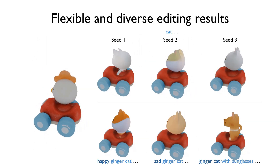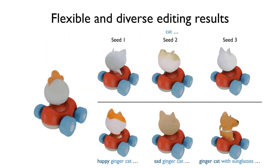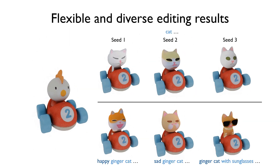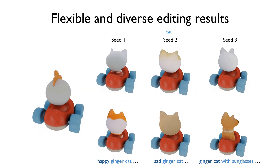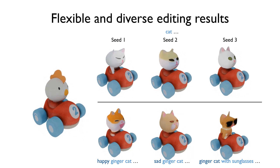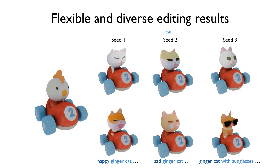Using different seeds, we can produce diverse results for the same prompt. With a detailed prompt, we can adjust different aspects of the shape simultaneously, such as appearance or mood.